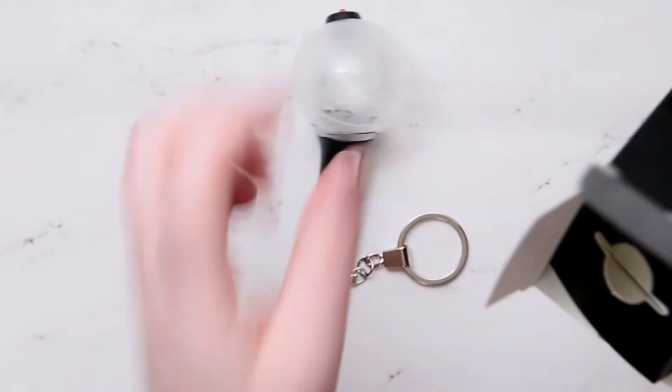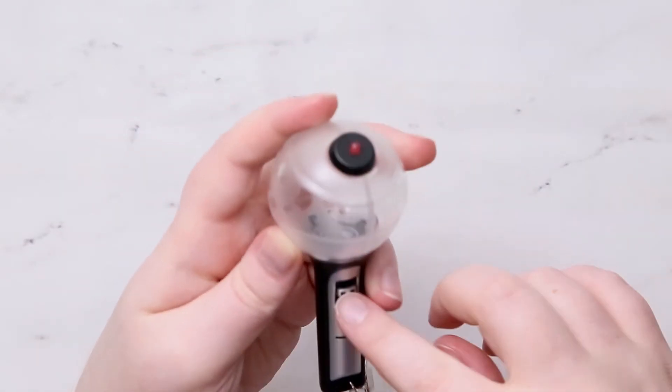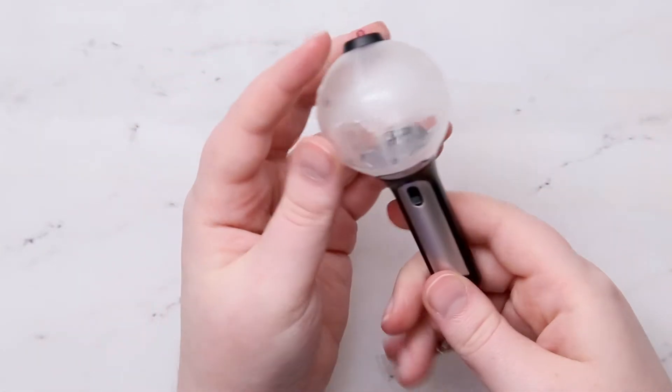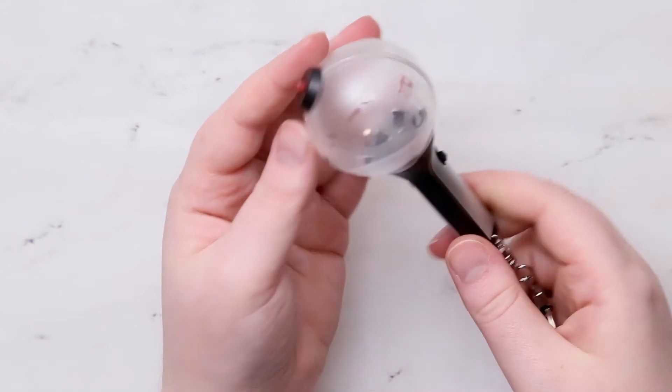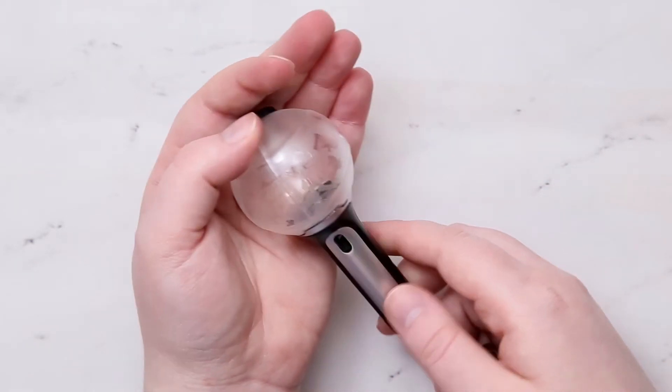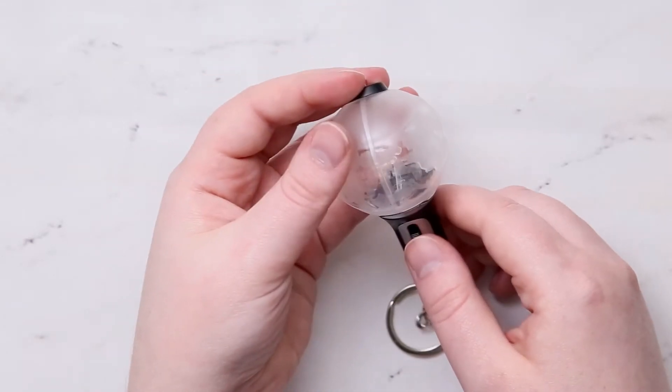I don't think there's anything else in the box. Yeah. So I'm not really sure what this part's for, but I think it's adorable. I really, really, really wanted to get one. But there it is. Simple unboxing of their official lightstick keyring version 2.